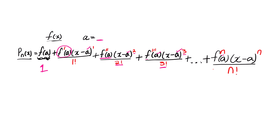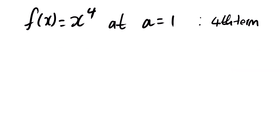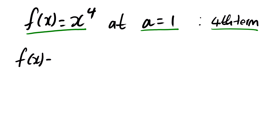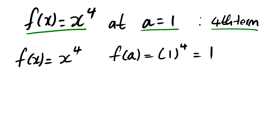Let us look at practical examples. The question is normally given as a scenario, but here I have paraphrased it. The given function is x to the power of 4, the point we evaluate at is a = 1, and we are looking for the first four terms of the Taylor series polynomial. Substituting: f(1) = 1⁴ = 1. That is the first term.